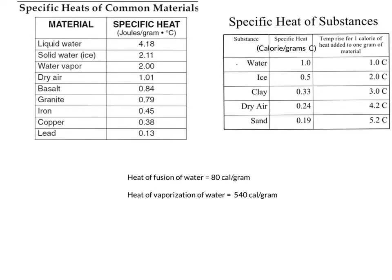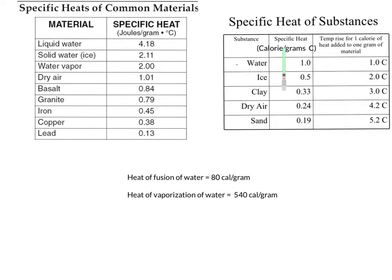Before moving to the problems, note that the specific heat of each substance is different. You can see the specific heat of water versus ice, water vapor, dry air, and so on. This chart is in joules per gram degree Celsius, so if your answer needs to be in joules, this is the chart to use. If, however, you are asked to solve for calories, the other chart shows specific heat values in calories per gram degree Celsius. The standard you use depends on what units are present in the problem.